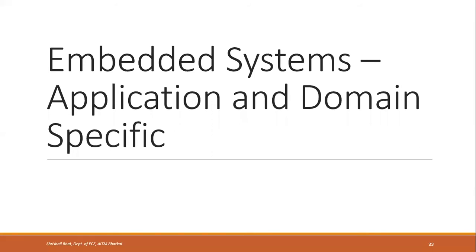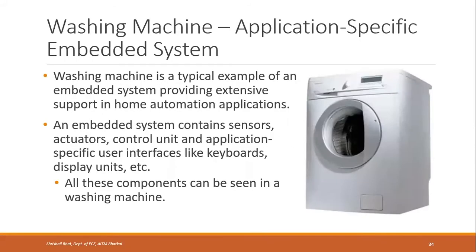The first example is an application-specific embedded system: a washing machine. A washing machine is a very common household or home automation appliance. It is a typical example of an embedded system providing extensive support in home automation applications.